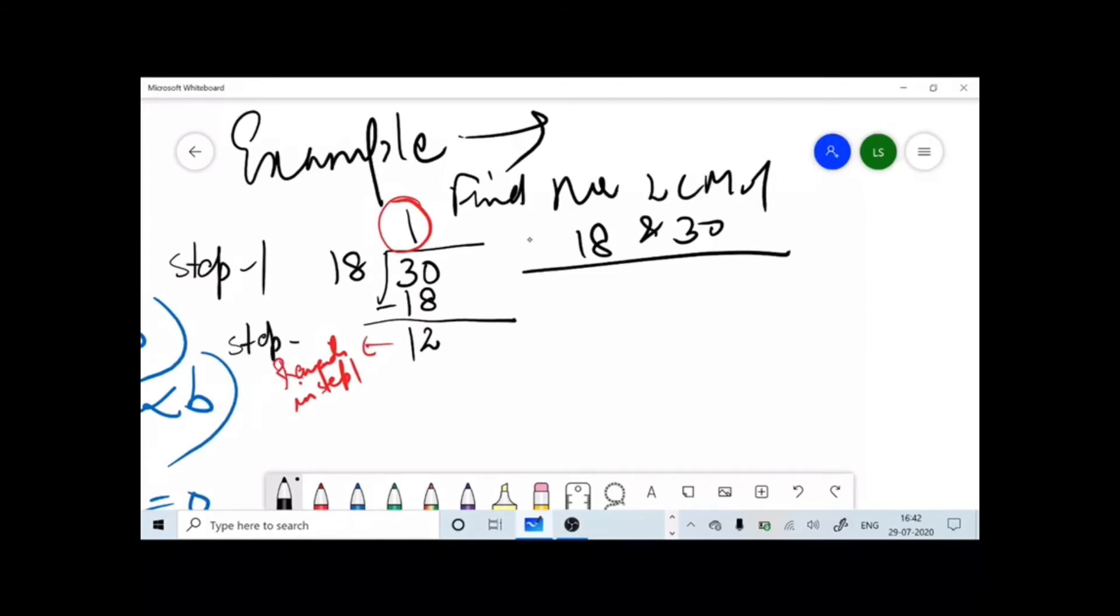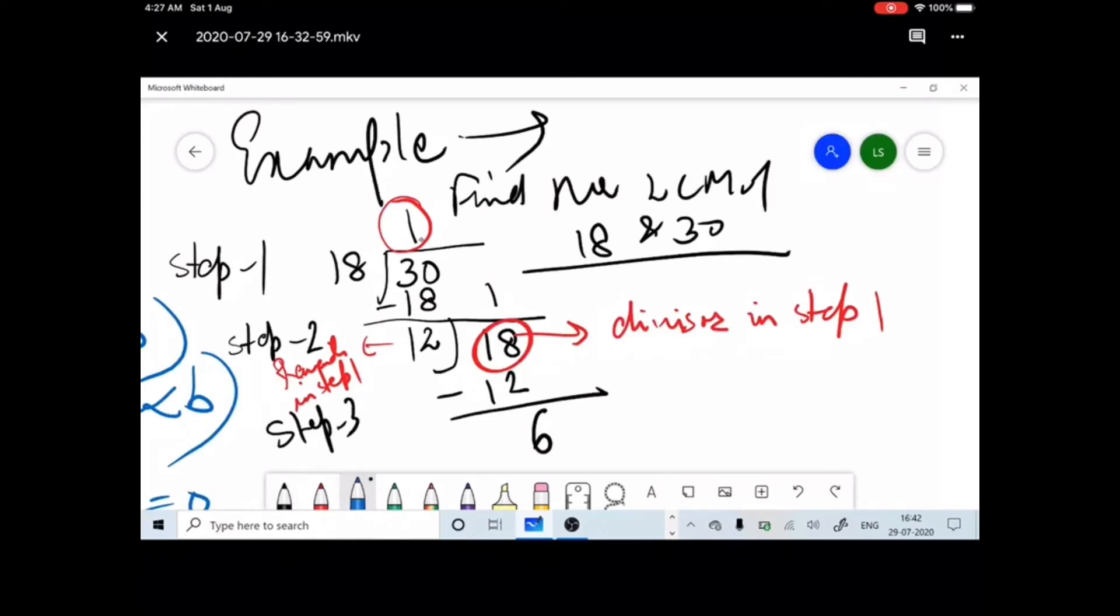But here what will happen in step 2? Here comes your step 2. Now 12 will divide what? It will divide 18, because 18 is the divisor in step 1. Again the same thing which I will do: 12 ones are 12, so we are left with 6. This is the remainder in step 2. If this is the remainder in step 2, what are we going to do? We'll put 12.